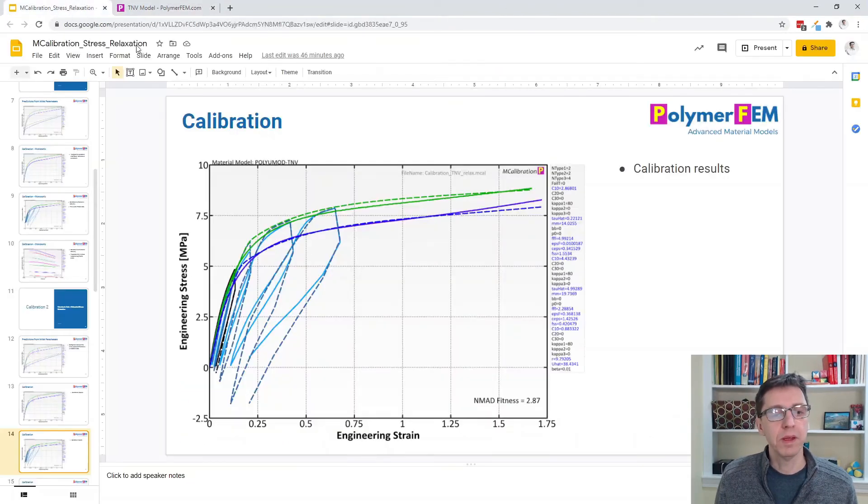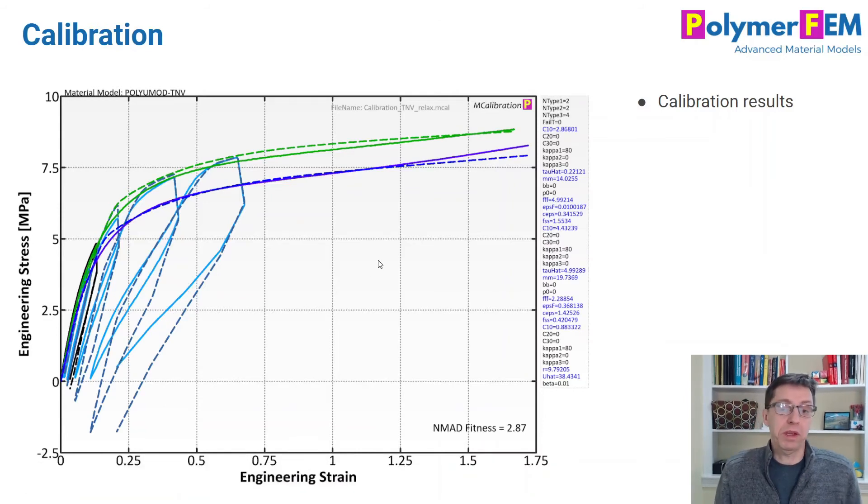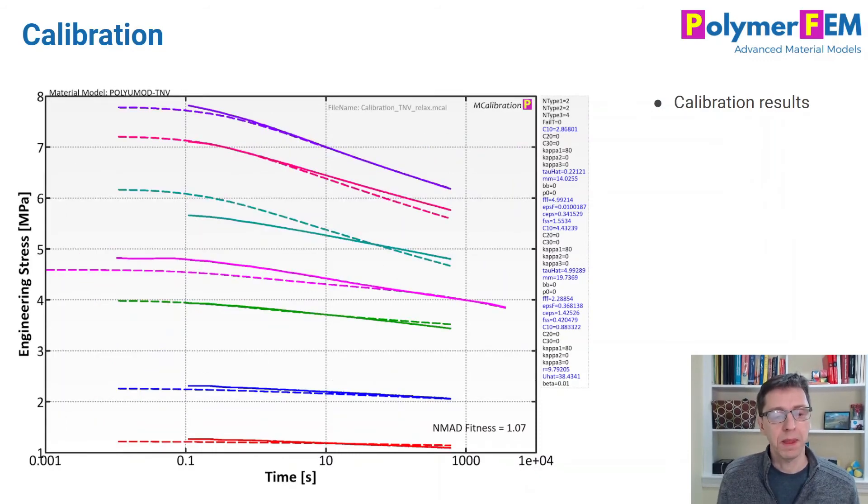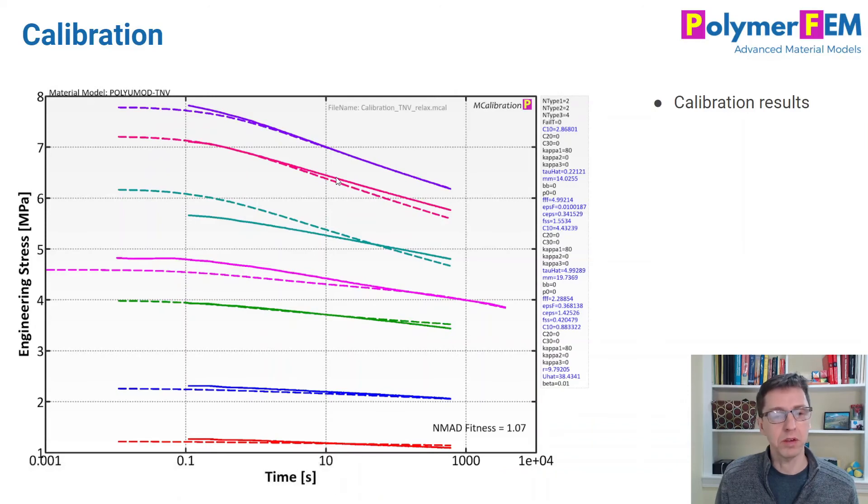In our example here, clearly that's a parameter that should be giving a slightly different slope here, but we couldn't calibrate that. The software can't do that because it wasn't given that information. That's the limitation of not having the unloading response. But otherwise, look at this. Look at the relaxation curves. They look fantastic over all ranges here. Very impressive.